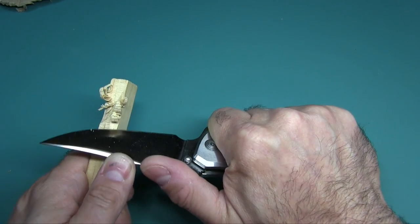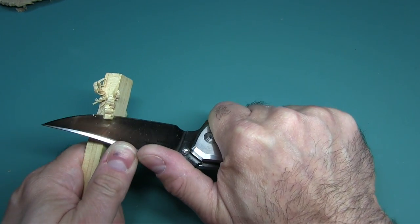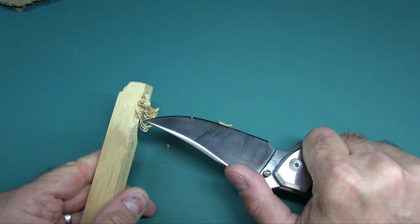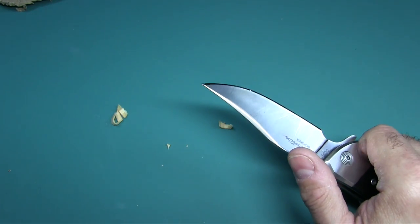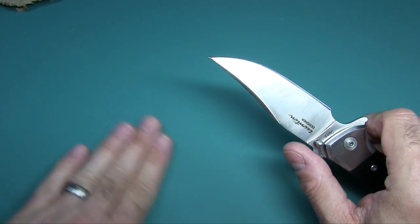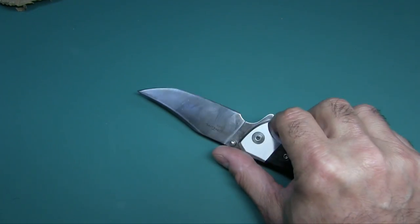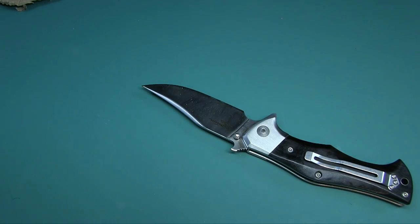So you can see it does a real good job. You do your feather sticks, make some good kindling, start some fires. And it's a good thing this is classified as a hunter folder. So you can take it out hunting, camping, things like that.